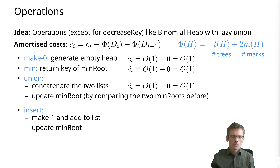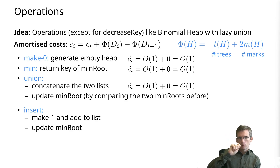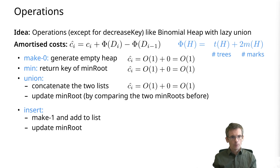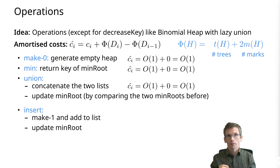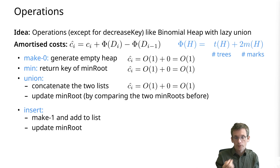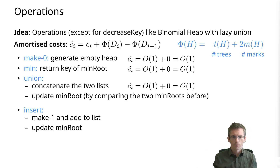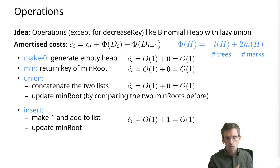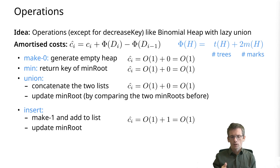Insert: we make a heap of this one node and add it to our list of trees. Then we potentially update the min root if the new one is smaller than the previous min. This is a constant amount of work. We get one additional tree, so the change in potential is one. Still, this is O(1).